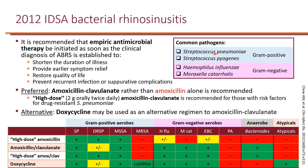If someone has a risk factor for drug-resistant Strep pneumo, you can also use a higher dose to overcome that resistance — specifically 2 grams twice a day of amoxicillin-clavulanate.